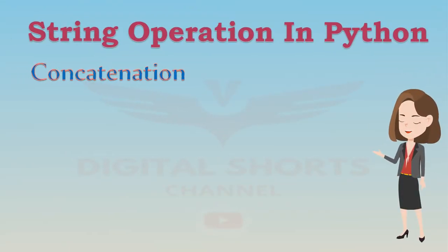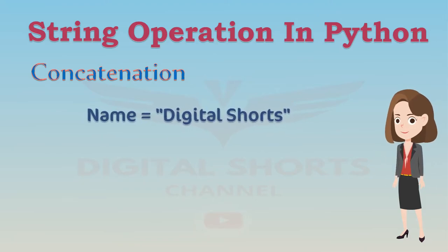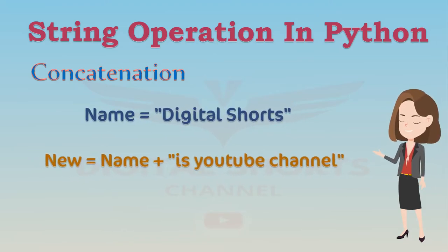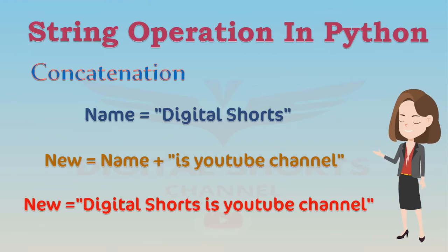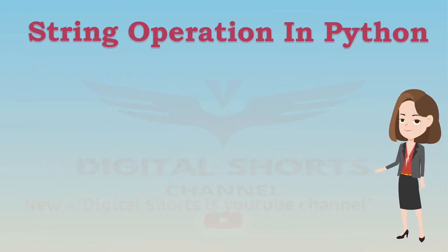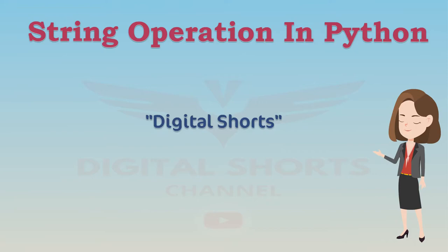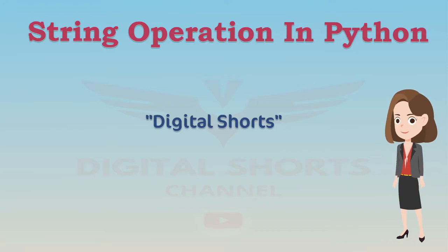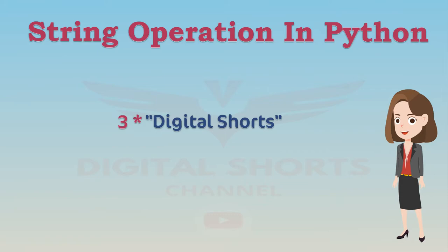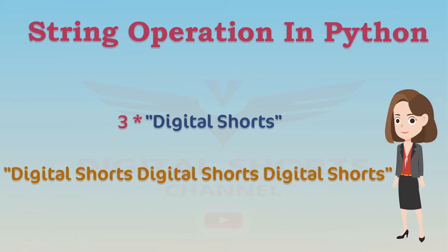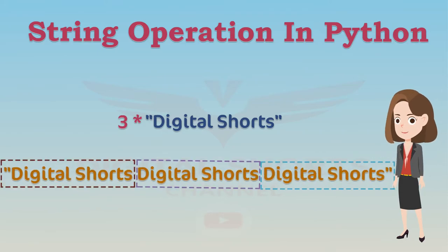We can concatenate or combine strings using the addition symbol. The result is a new string that is a combination of both. We can also replicate values of a string — simply multiply the string by the number of times we would like to replicate it, in this case 3. The result is a new string consisting of 3 copies of the original string.